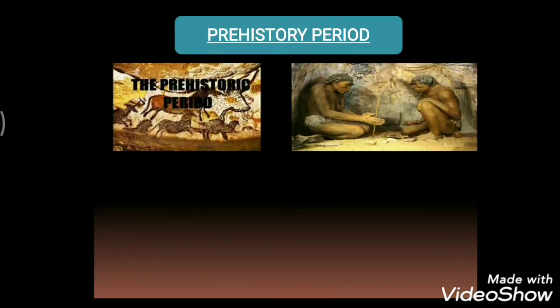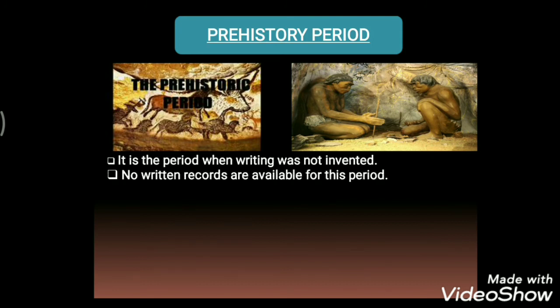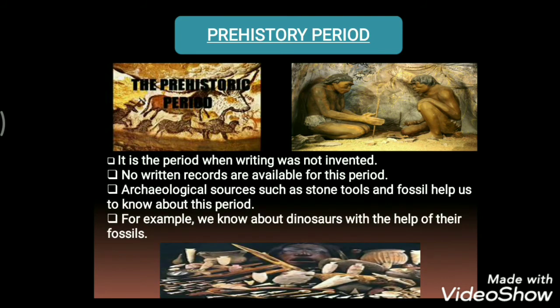The first period is prehistory — the period when writing was not invented, relating to the early man age. Since writing was not invented, we have no written records for this period. We come to know about it from different stone tools and fossils. For example, we know about dinosaurs with the help of their fossils; from those fossils we come to know that a creature named dinosaur existed.